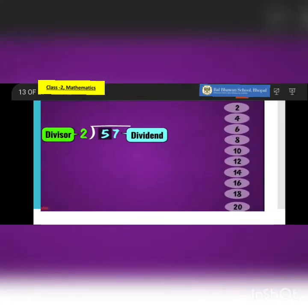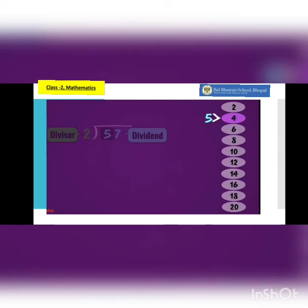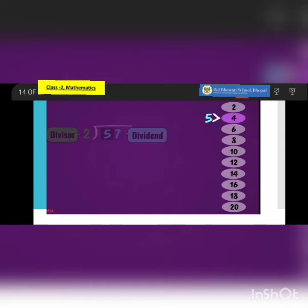You must be noticing that on the right hand side I have written some numbers - this is the product of the table of 2. Whenever we are taking the divisor and dividend, we have to see the divisor first and count the table of the divisor. So 2 is the divisor here and we have to count the table of 2 to solve this problem.